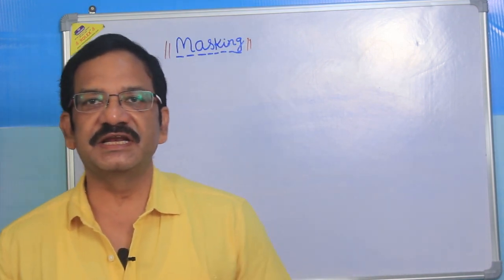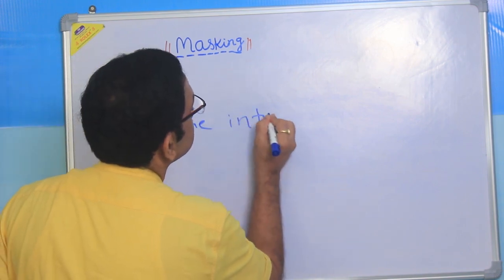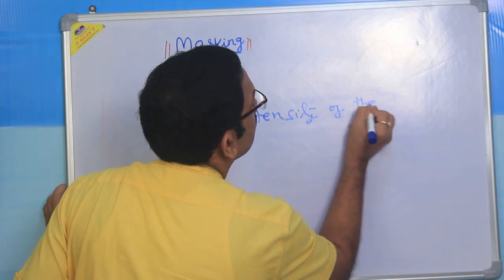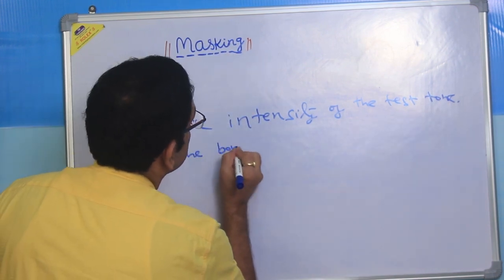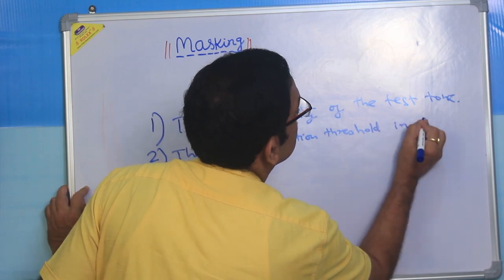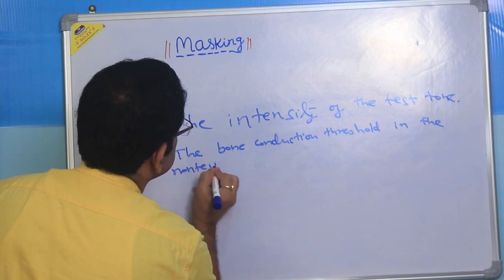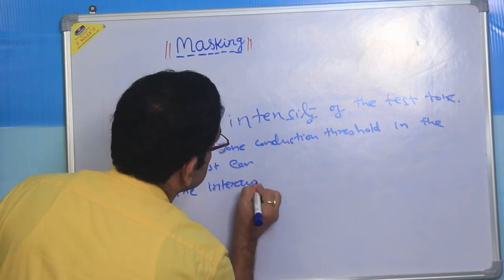A full understanding of masking is essential in clinical audiology, as in many cases we will be unable to obtain accurate audiograms unless masking is properly applied. Masking depends on the interrelationship of three factors: number one, the intensity of the test tone; number two, the bone conduction threshold in the non-test ear; and number three, the interaural attenuation.